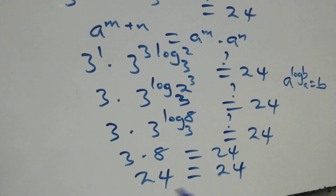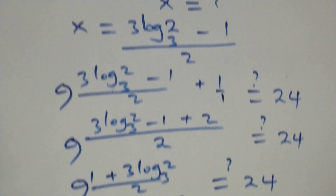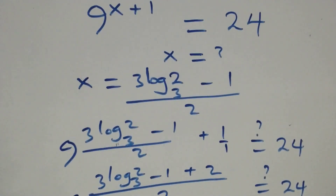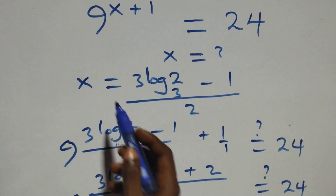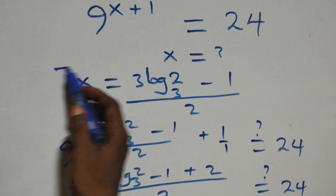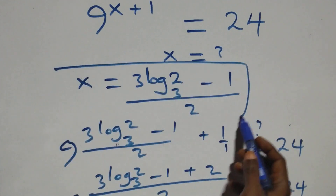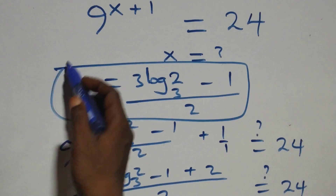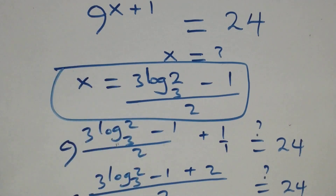Left hand side equals right hand side. Therefore, we conclude that x equals three log two base three minus one, all over two, satisfies this given problem.